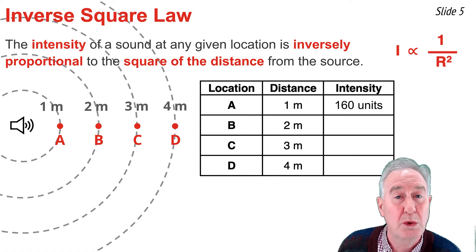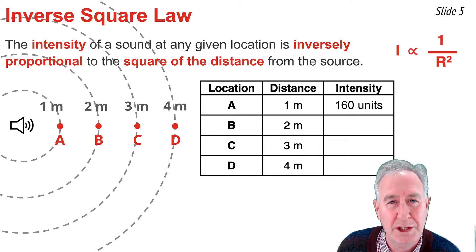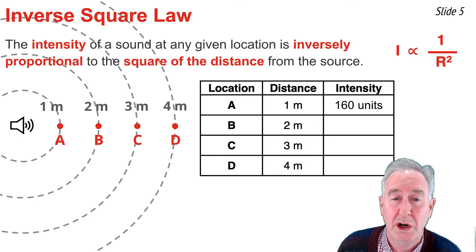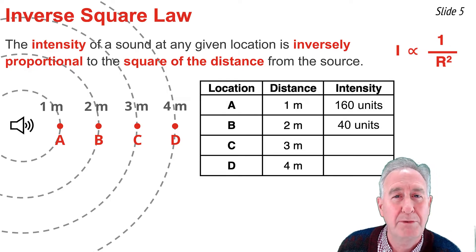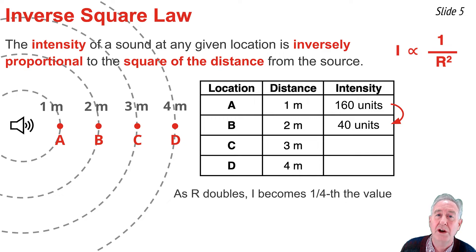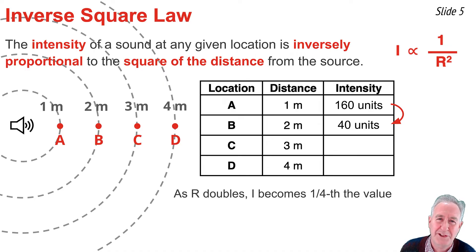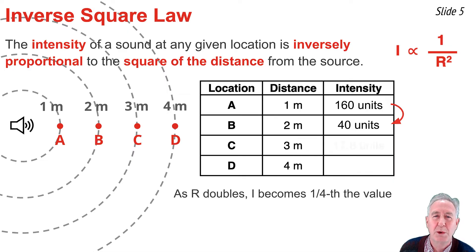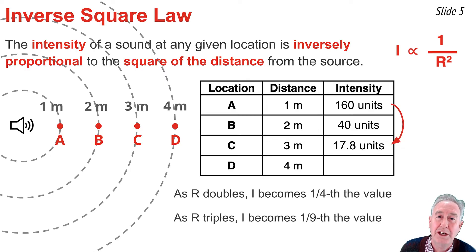At location B, twice as far from the speaker as A, the intensity should be less since intensity varies inversely with the square of the distance. Since we're twice as far away, the intensity would be one-fourth as much — 40 units at location B. At location C, 3 meters away — three times further than A — the intensity goes down by a factor of 3 squared, so 160 divided by 9 gives 17.8 units.